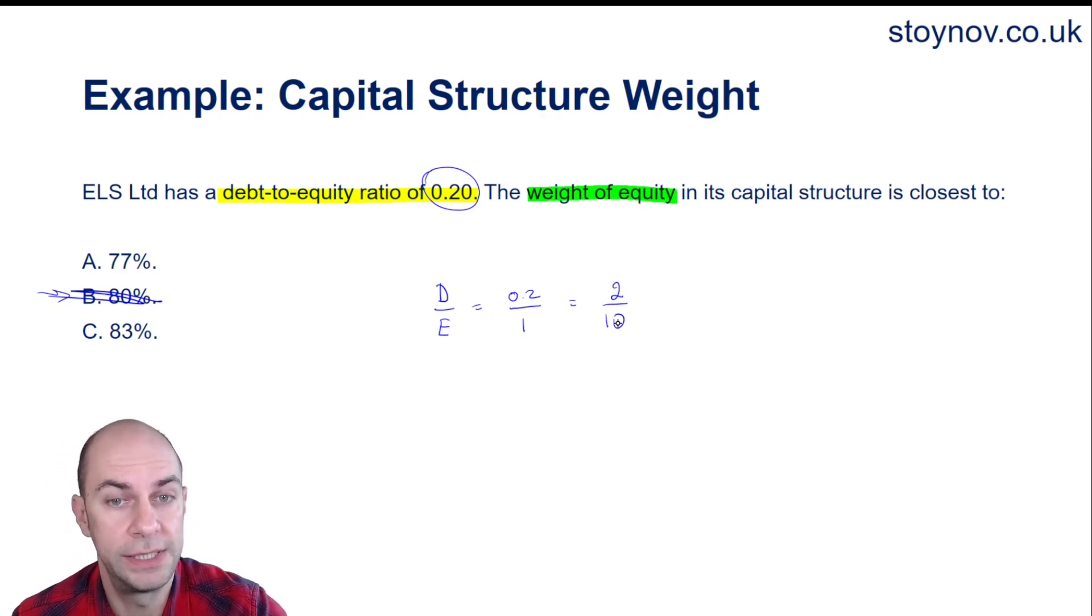So what we are saying essentially here is that for every 0.2 dollars of debt, we have 1 dollar of equity. Or said another way, for every 2 dollars of debt, we have 10 dollars of equity.